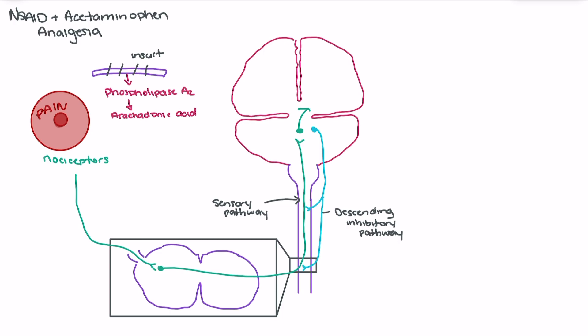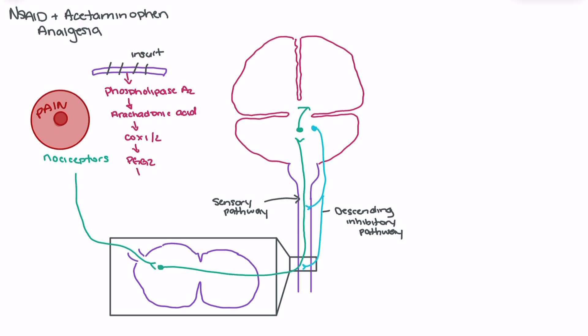Arachidonic acid will bind to COX-1 or 2 to cause the release of PGG2. PGG2 is converted through what's called the POX pathway into PGH2.